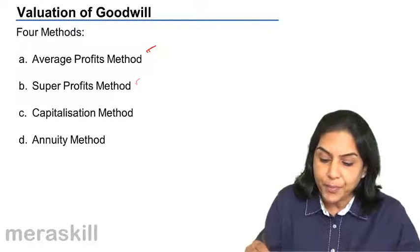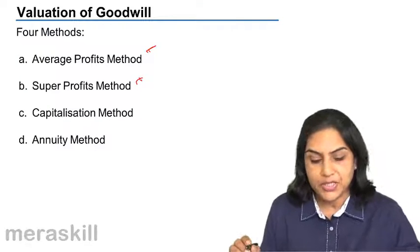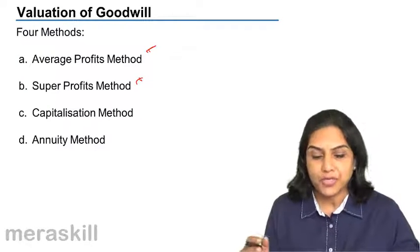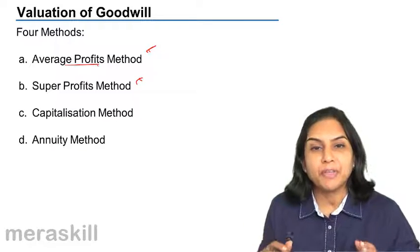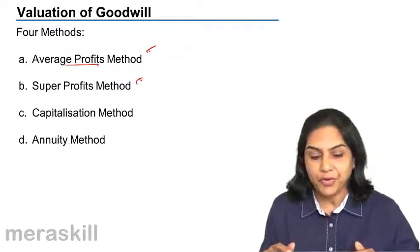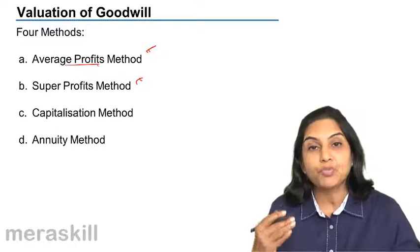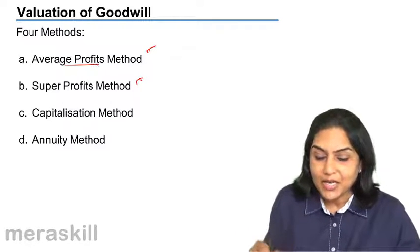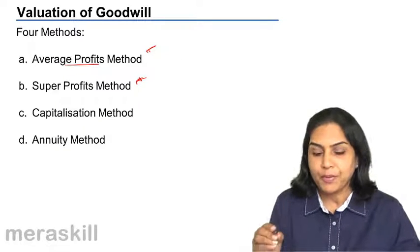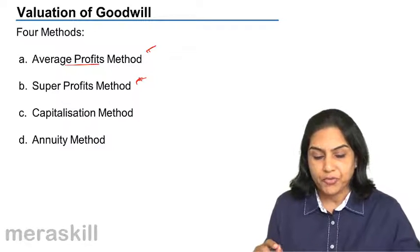Or we talk of super profits. Super profits is nothing but the extra profits. The average profit is the total profit. Every firm may be generating some amount of profit. The extra profit, the super profit, the profits which any business makes, goodwill could be based on such super profits.